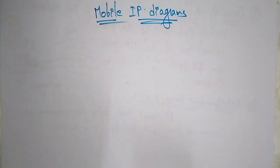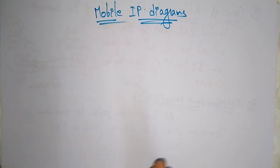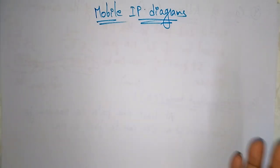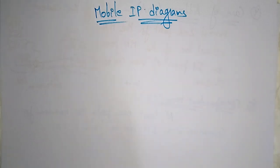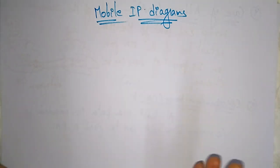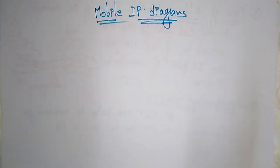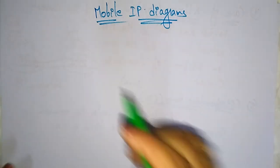Hi students, welcome back. Now let's see the Mobile IP diagram. With the help of these diagrams you will get a clear idea of how Mobile IP will work. So far we have seen the terminologies like home agent, foreign agent, correspondent node, COA, tunnel — everything we have seen.